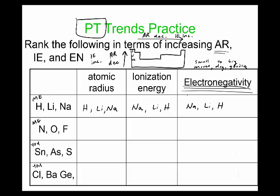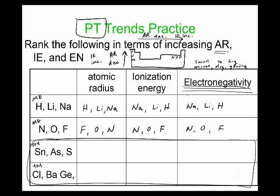So for radius for N, O, and F. If N, O, F is going across the period here. So from small to big, F is the smallest, then oxygen, then nitrogen. And for ionization energy, it's N, O, and F. And for electronegativity, it's going to be the same like that. So you guys try these two for your periodic table trends.